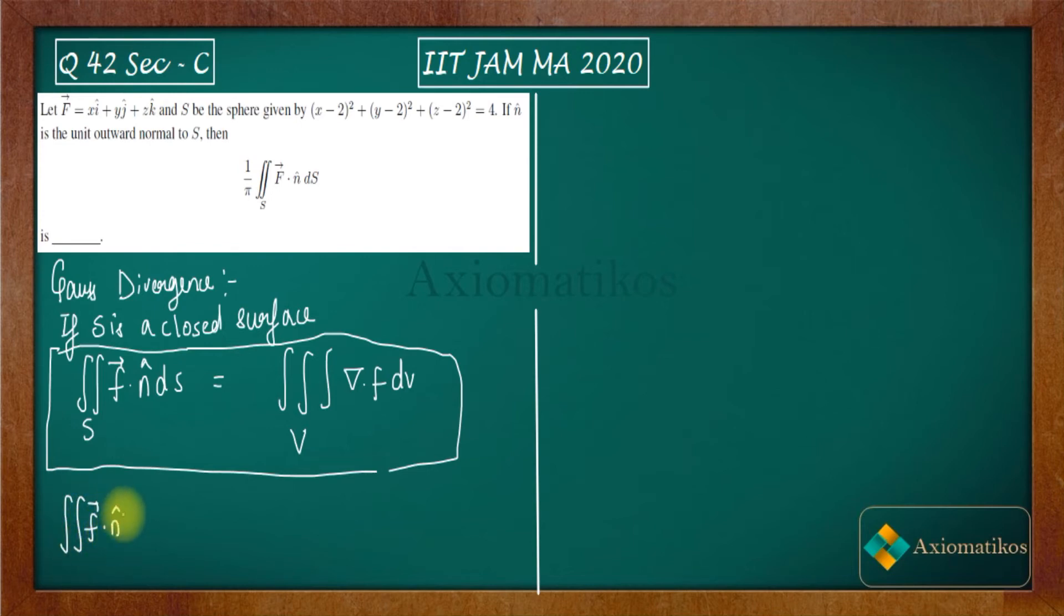We have f vector dot n cap dS and what is this f vector? f vector is xi plus yj plus zk. So what you have to do, you have to find out del dot of xi plus yj plus zk. And you are integrating this del dot f over the volume V, where V is the volume of the sphere.